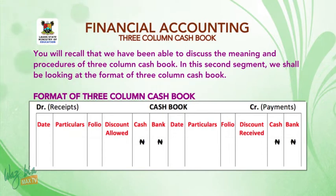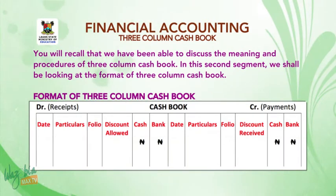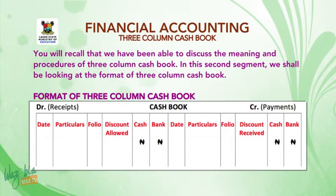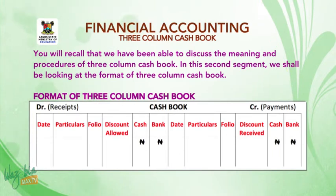So on the debit side, you will now have six columns: date, particulars, folio, discount allowed, cash, and bank. And on the credit side as well, which is the payment side, you have six columns: date, particulars, folio, discount received, cash, and bank.